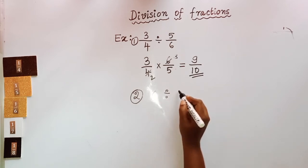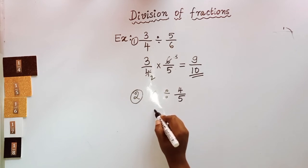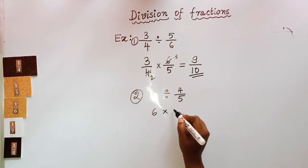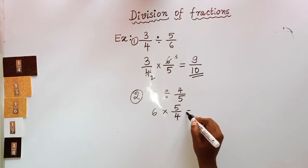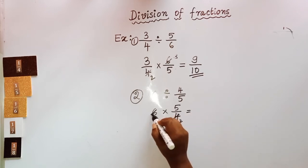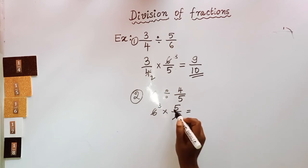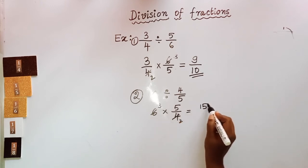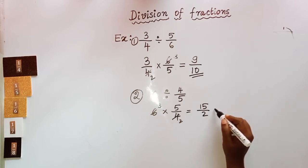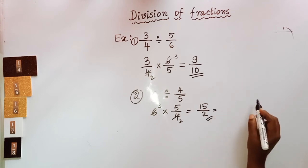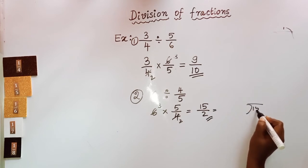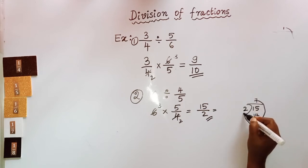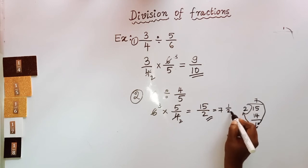Take the next example: 6 divided by 4/5. Keep 6 as it is. Since we are changing to multiplication, take the reciprocal of the second fraction: 4/5 becomes 5/4. So 6 × 5/4 = 30/4. Simplifying: 15/2. This is an improper fraction; changing to a mixed fraction — divide 15 by 2: 2 × 7 = 14, remainder 1 — gives 7 and 1/2. So the answer is 7½.